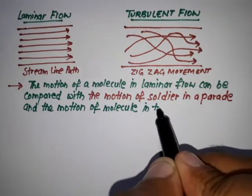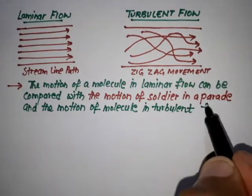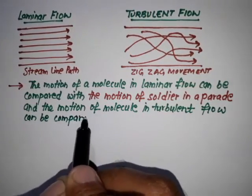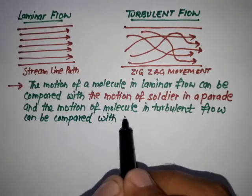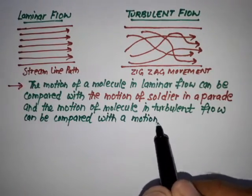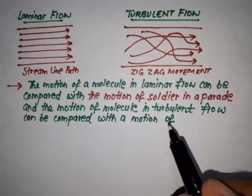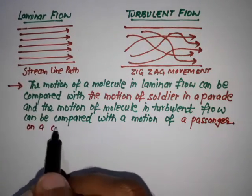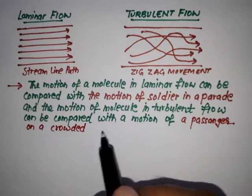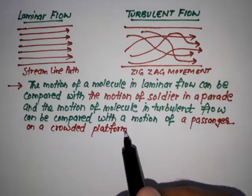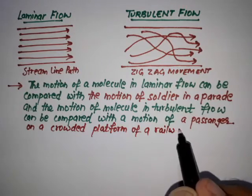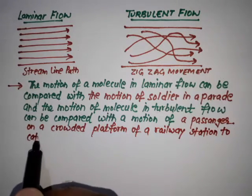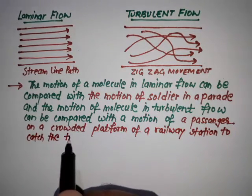in turbulent flow can be compared with the motion of a passenger on a crowded platform of a railway station to catch the train.